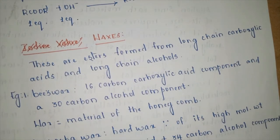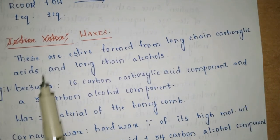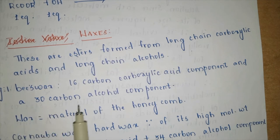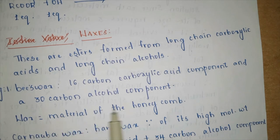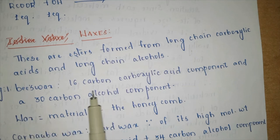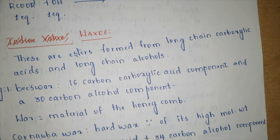Waxes are esters formed from long-chain carboxylic acids and long-chain alcohols. An example is beeswax: a 16-carbon carboxylic acid component and a 30-carbon alcohol component. In an ester, one part is the acid and the other is the alcohol. Beeswax is the material of a honeycomb. Another example is carnauba wax, also called hard wax.